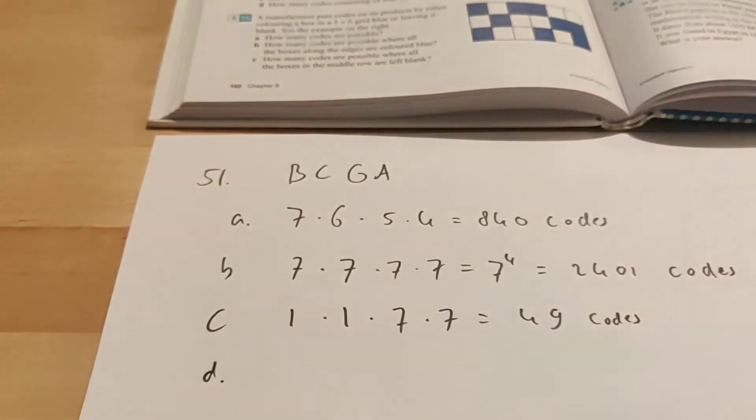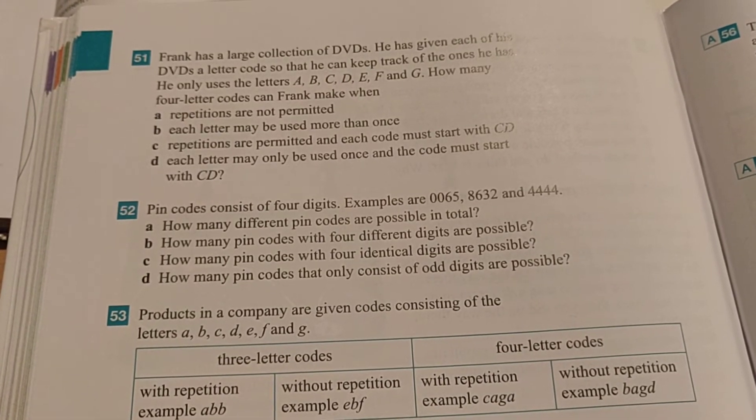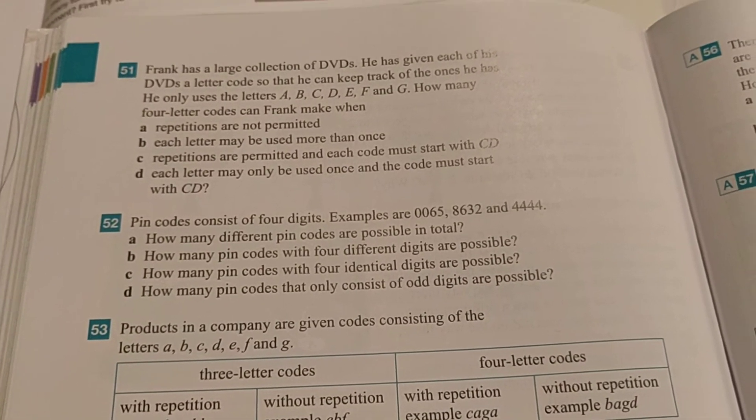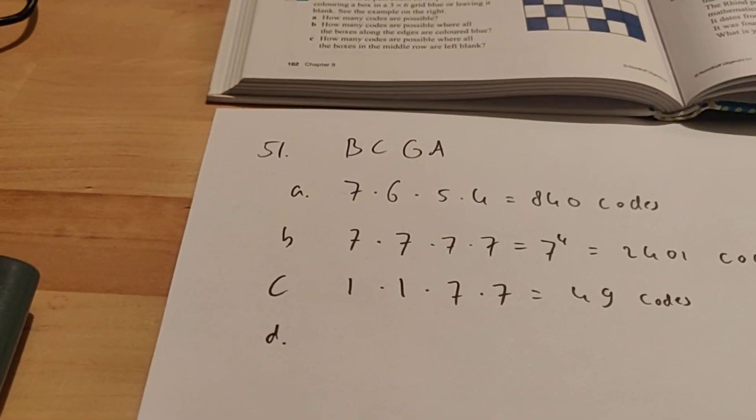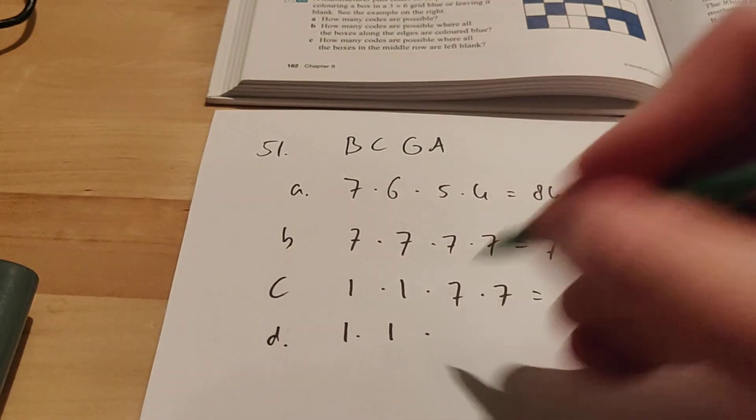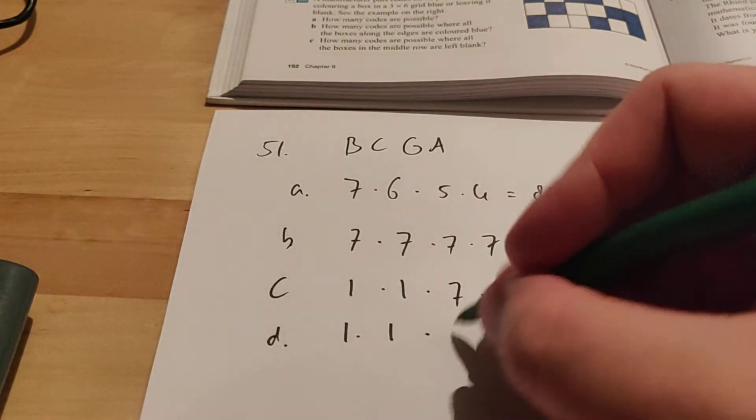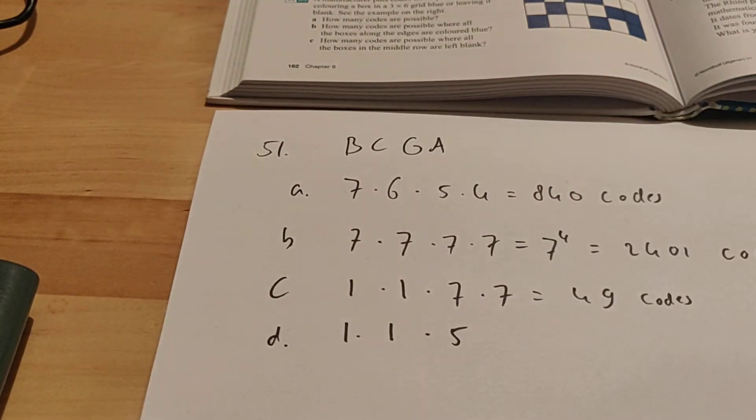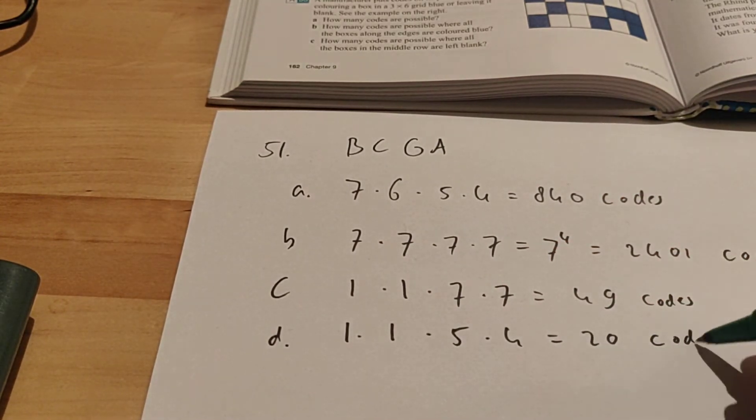Then we go to exercise D. It says each letter may only be used once, and the code must start with CD. So this one is very similar to exercise C. The beginning must be the same. Here it's also 1 times 1. But now he cannot use letters again. So the C and the D he already used. That means that there are still 5 letters left. And then after that, there are 4 letters left. So 1 times 1 times 5 times 4 is 20. So he can make 20 different codes.